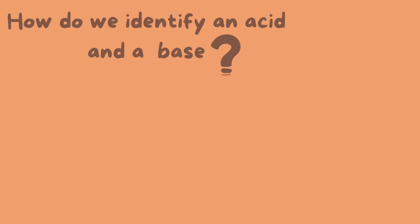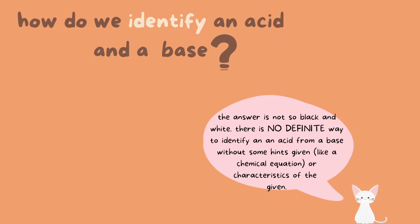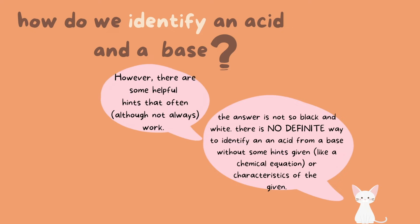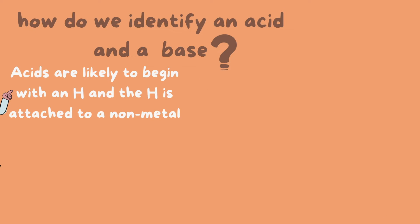So how do we identify an acid and a base? Well, the answer is not so black and white. There is no definite way to identify an acid from a base without some hints, like a chemical equation or some characteristics of a solution. However, there are some helpful hints: acids are likely to begin with an H, and the H, or hydrogen, is attached to a non-metal.